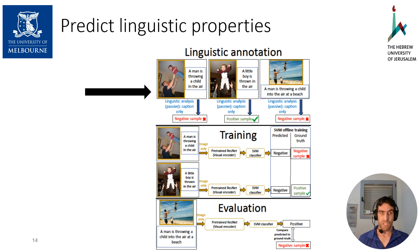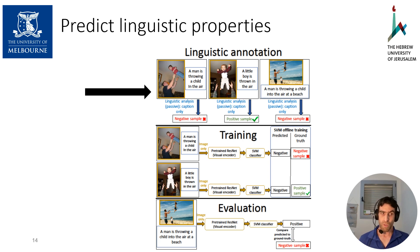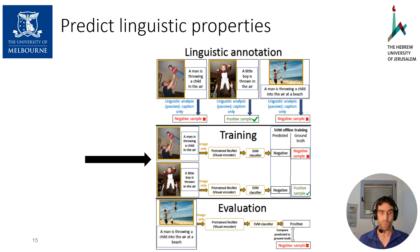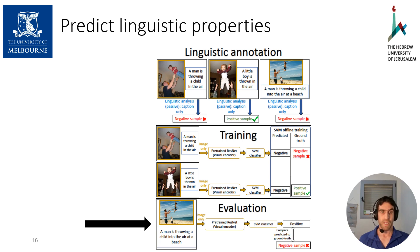To determine whether vision constrains each of the properties, we trained visual classifiers to predict, given an image, whether a given property would be expressed in its descriptions. We start by annotating for each image whether it's a positive or negative sample — that is, whether its description expresses that property. Next, we train an SVM classifier that, given the embedding of the image generated by a pre-trained visual encoder, predicts if the description would express the property. Finally, we test this classifier on held-out data. If the classifier performs significantly better than chance level, the expression of this property is correlated with visual features.